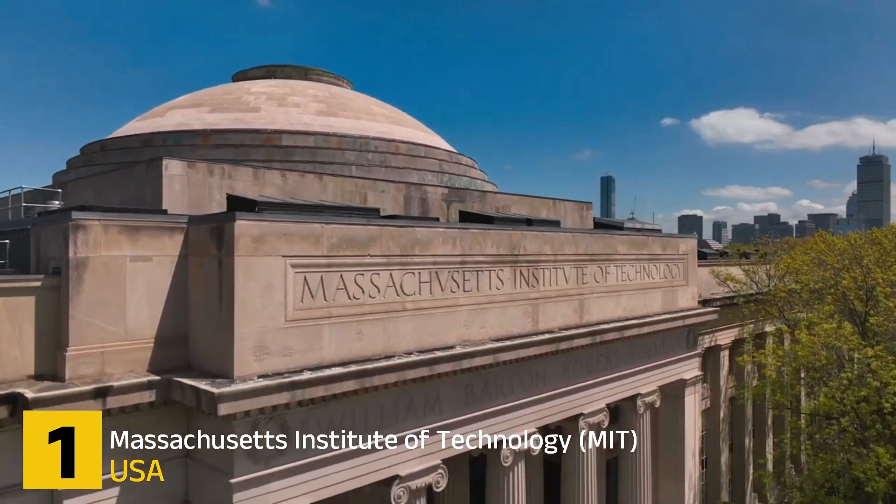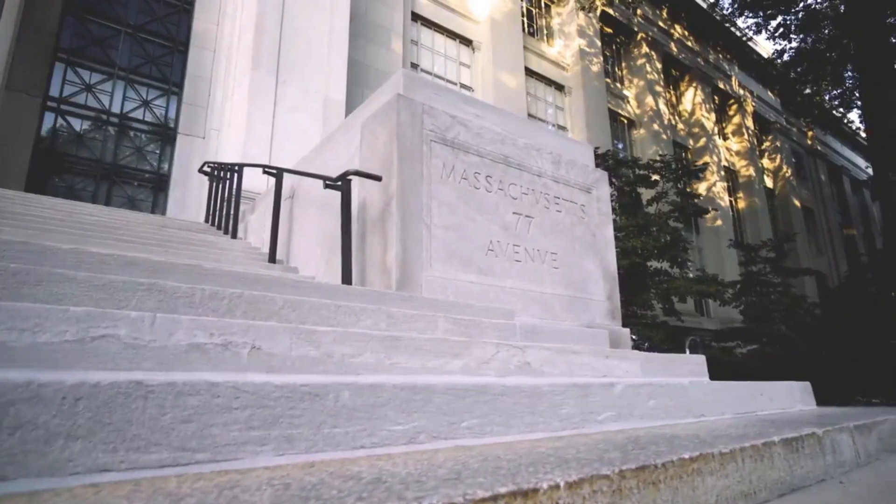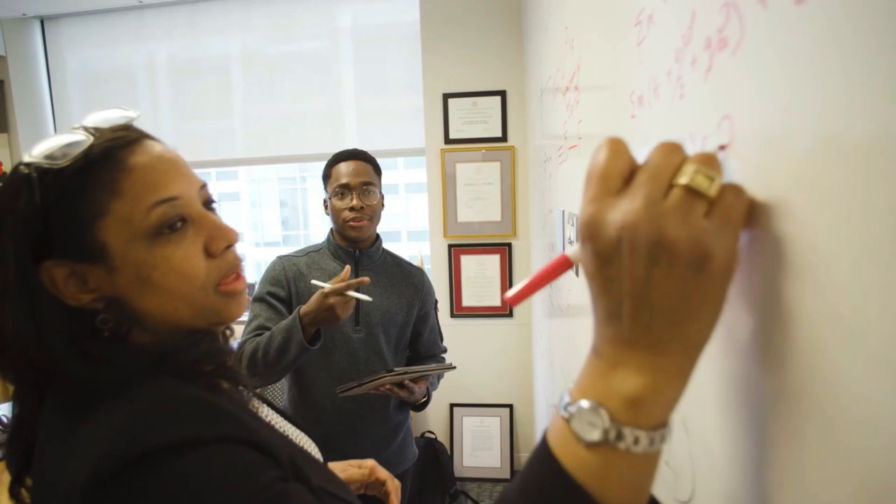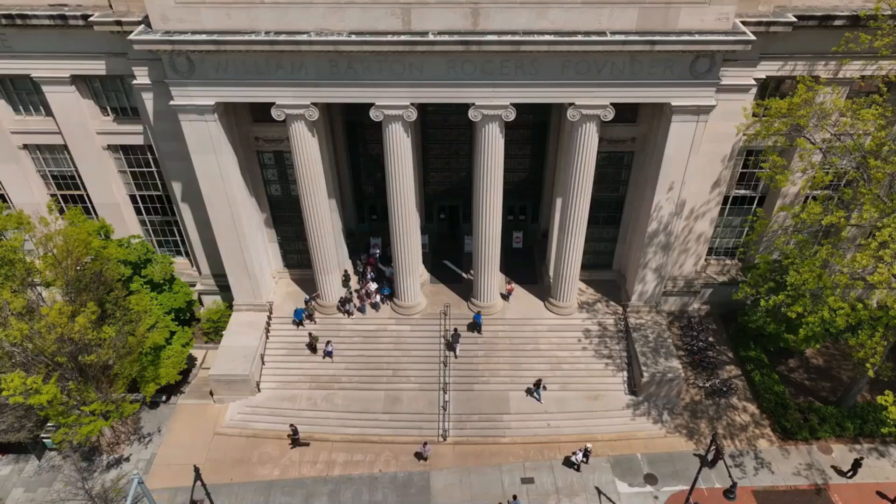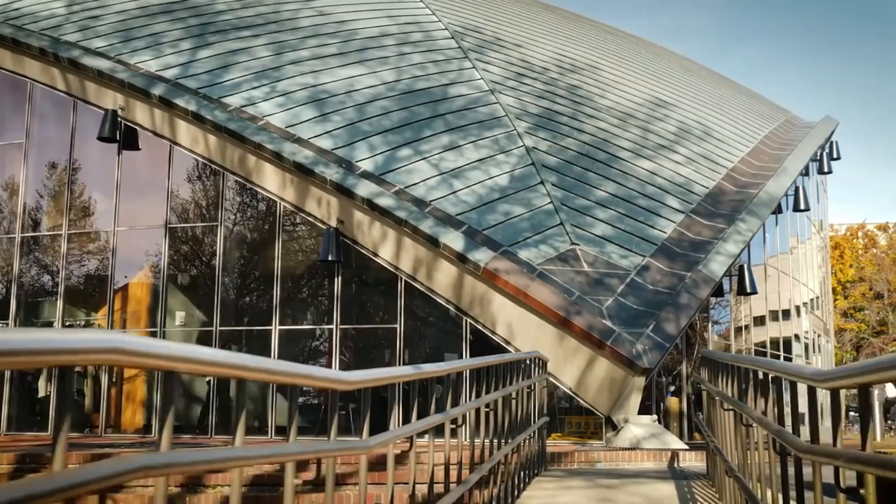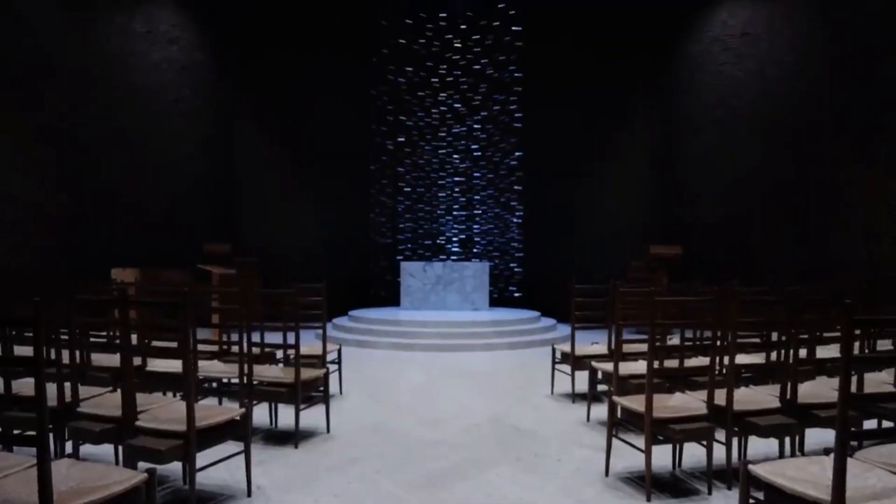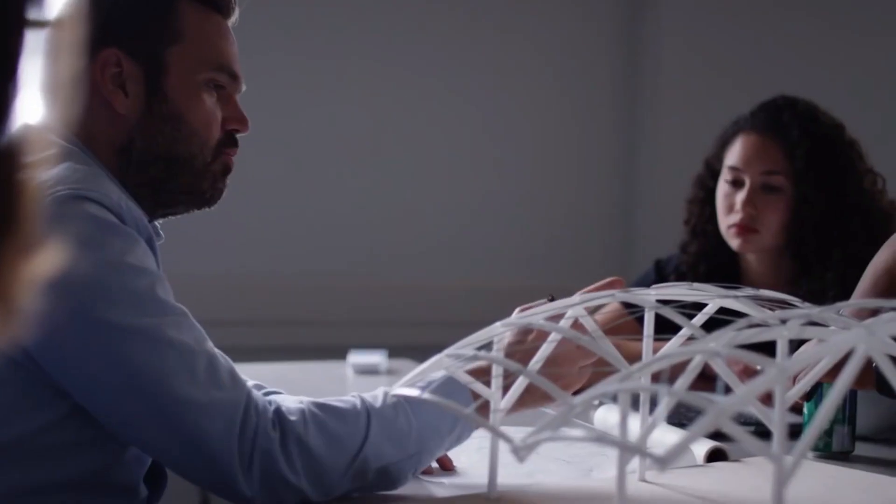Number 1. Massachusetts Institute of Technology. The Massachusetts Institute of Technology, MIT, located in Boston, Massachusetts, is globally recognized as a leading institution for engineering and technology. It consistently holds the top position in world rankings and is renowned for its pioneering research and innovation across various engineering disciplines, including civil and structural engineering.